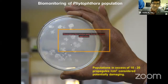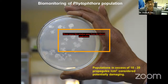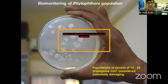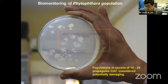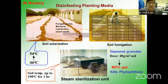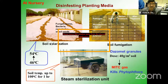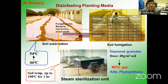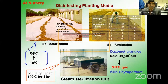Biomonitoring of Phytophthora species is very important before undertaking management practices. In an orchard, you must check the population level — if it exceeds 10 to 20 propagules per cc of soil, considered a potentially damaging level, then you can proceed with control measures. At nursery level, control techniques are directed toward soil solarization, soil fumigation, and steam sterilization. In Nagpur conditions, during summer when temperatures exceed 45°C, we use 100-micron polythene sheets over the potting mixture for soil solarization.